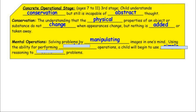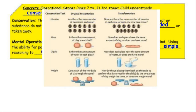Mental operations — solving problems by manipulating images in one's mind — begin here, and children start using simple reasoning to solve problems. Looking at conservation tasks: with coins laid out, changing the spacing might fool someone early on, but the amount is the same. With mass, two lumps of clay — one left as a lump, one rolled out — are the same volume. Similarly with fluid in glasses. And with weight, a pound of rocks versus a pound of feathers: even though one might seem heavier, they're both a pound.